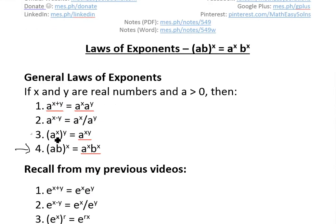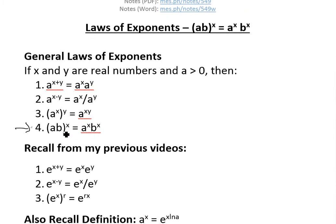And if it's in brackets a to the power of x then to the power of y, this is the same thing as writing a to the power of x times y. And now the fourth law which I'll prove today: a times b all to the power of x can be written as a to the power of x times b to the power of x.